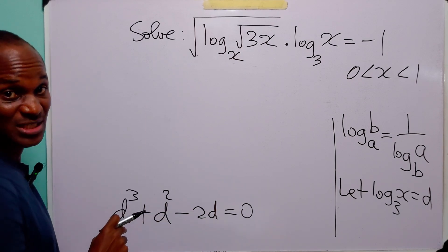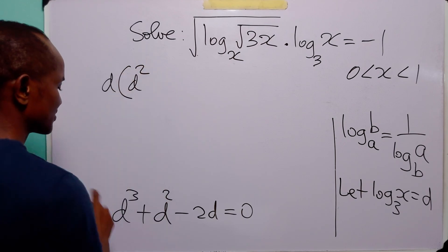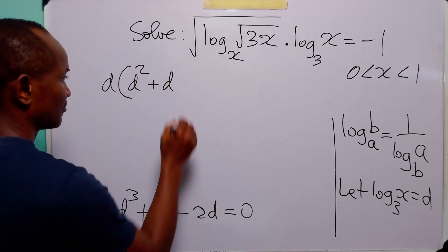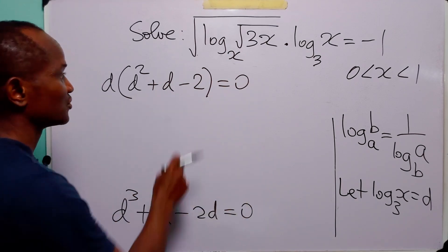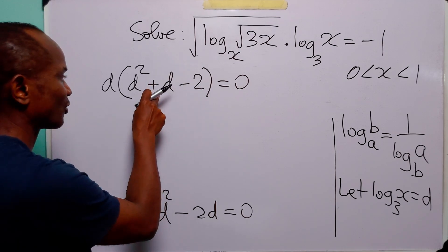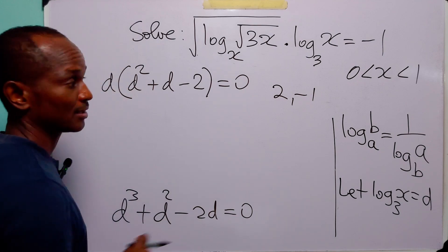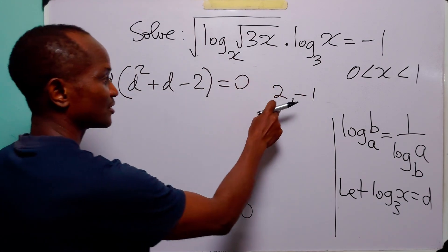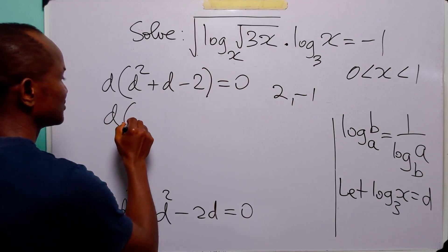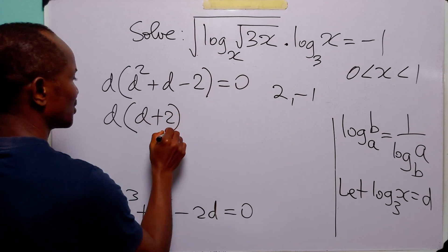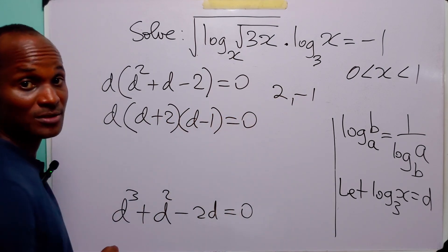We can solve this cubic equation by factorization. First we have a common factor which is d, giving d times d squared plus d minus 2. To factor the quadratic, we find factors of minus 2 that add up to 1: those are 2 and minus 1, since 2 times minus 1 is minus 2 and 2 minus 1 is 1. So this gives us d times d plus 2 times d minus 1, equals 0.